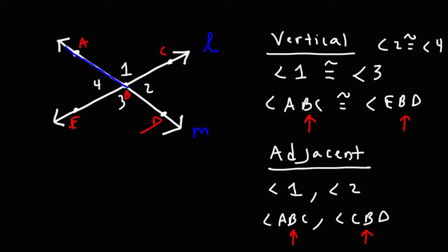So angle one is ABC and angle two is CBD. The common ray or common side that they share is ray BC. Those are adjacent angles — angles that are right next to each other, sharing a common vertex and a ray.